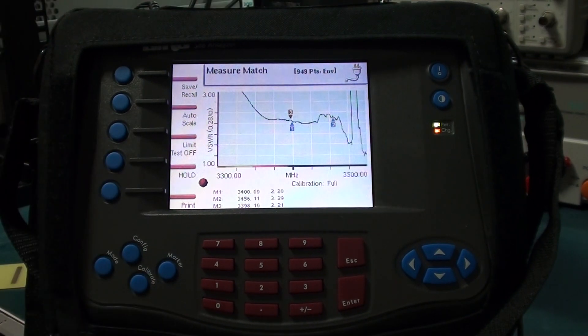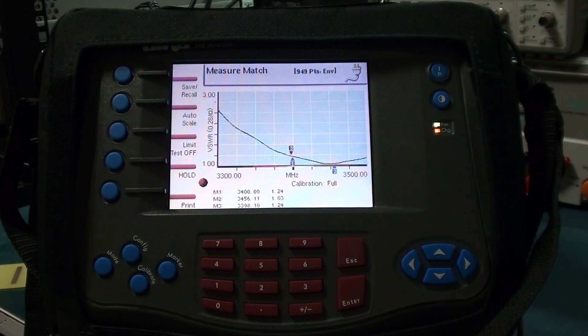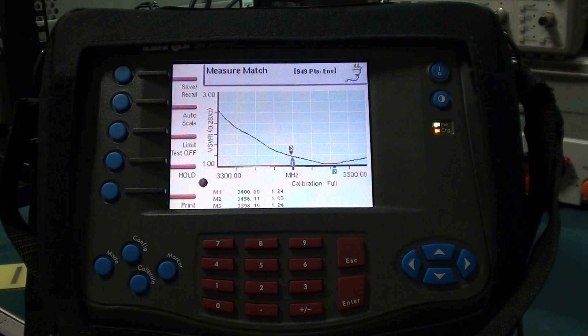Hit run. Much better. Look at that, 1.03 to 1 at 3456.1, and barely more than 1.24 for both region 1 and region 3 call frequencies. I know which antenna I'm going to be using on my 3.4 gigahertz dish.